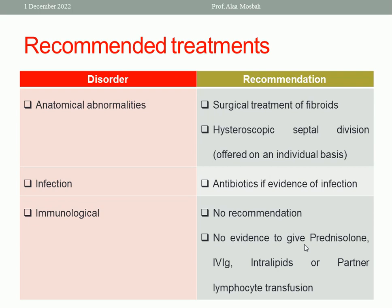For anatomical abnormalities: if there is a leiomyoma, surgical treatment — myomectomy — is recommended. If there is a uterine septum, hysteroscopic septum division can be performed, but this is offered on an individual basis and by an experienced gynecologist.